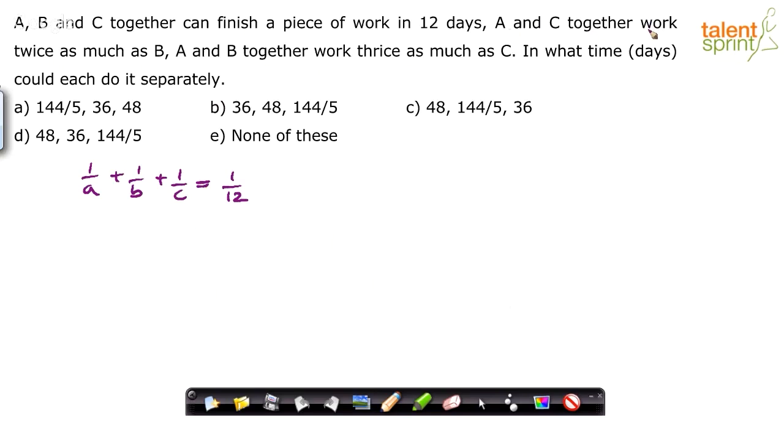A and C together work twice as much as B. What does it mean? 1/A + 1/C = 2 times of 1/B, or 2/B simply. A and C together work, how much will A and C complete in one day? 1/A + 1/C. Twice as much as B, 2 times of what B can do in one day, so 2 times of 1/B which is 2/B.